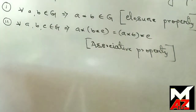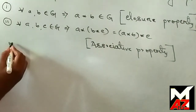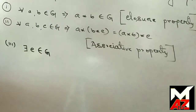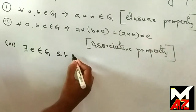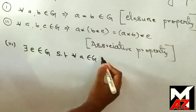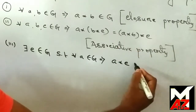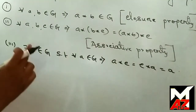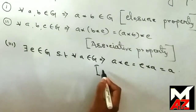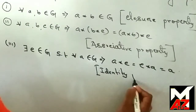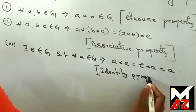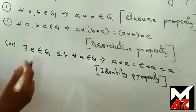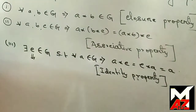The third property: there exists E belonging to G such that for all A belonging to G, A star E equals E star A equals A. This is called the identity property, and E is the identity element of the group G.